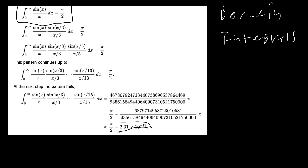The reason it converges to pi over 2 for every single one of these — until you reach 15 — has to do with the Fourier transform and some very complicated concepts. We're not going to go into those right now, but we are going to take a look at the second and third Borwein integrals. So we're going to be evaluating those two today.